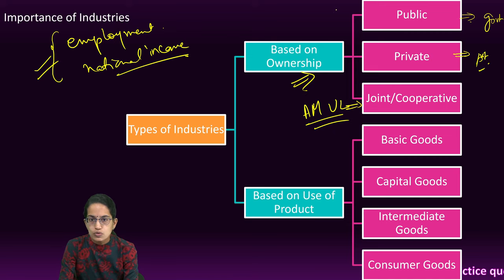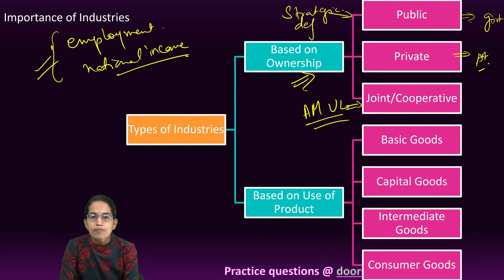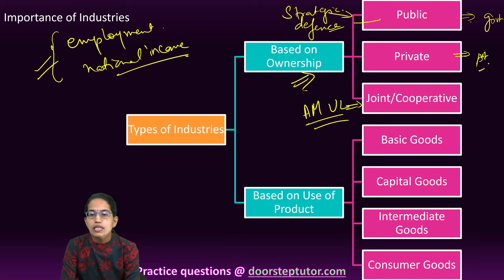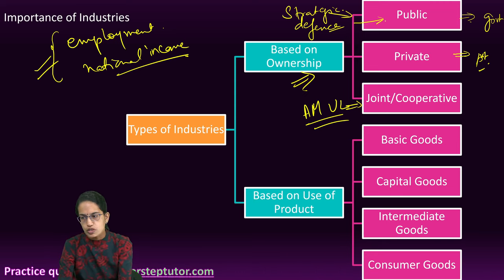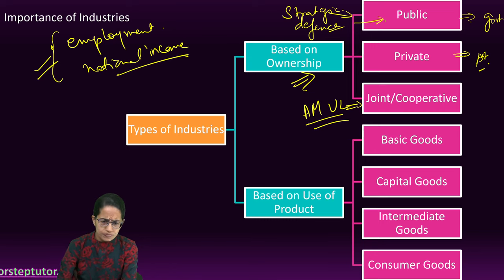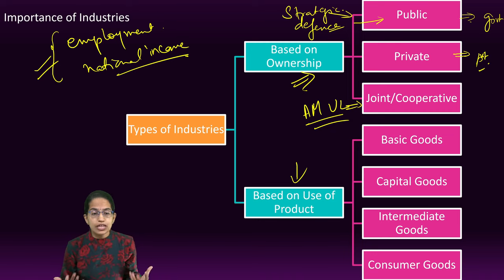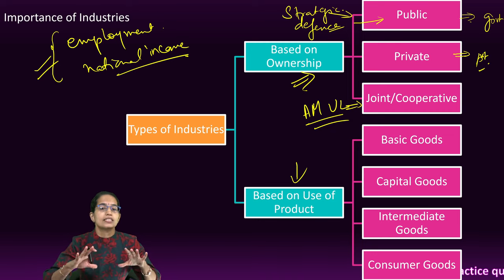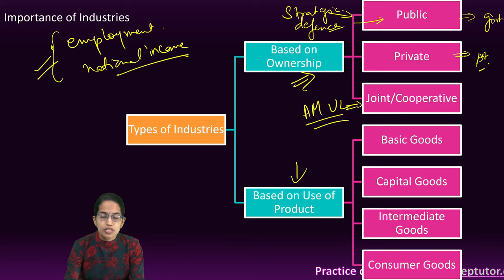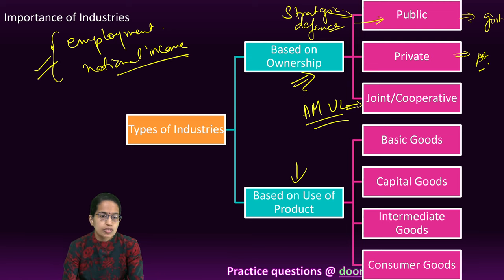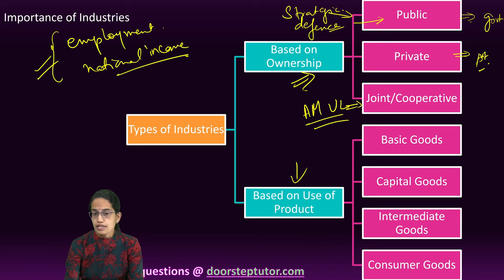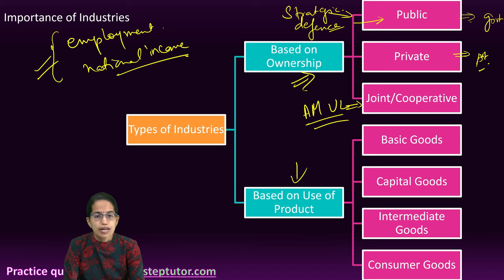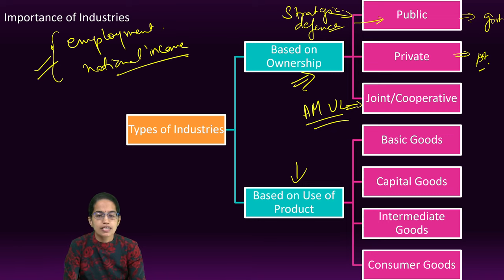Amul is an excellent example of a cooperative industry where people come together and work as a unit. A public industry is controlled and funded by the government, while private is under private control. Industries meant for strategic purposes — defense and security — are mostly in the public sector, not just in India but across the globe. When answering questions on types of industries, we should classify and subclassify rather than simply listing large scale, small scale, medium scale, private, joint.